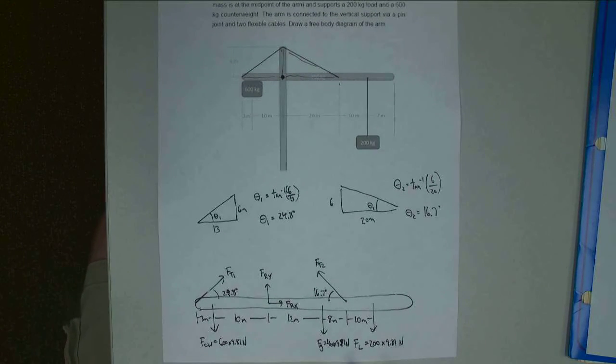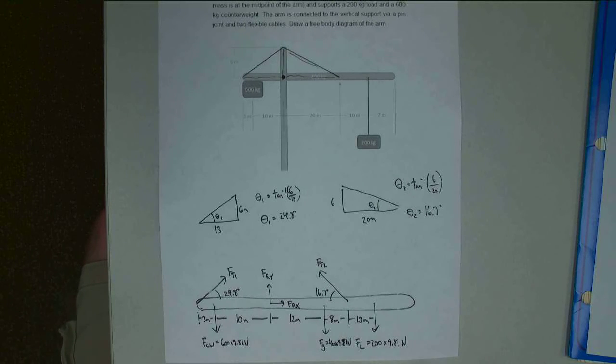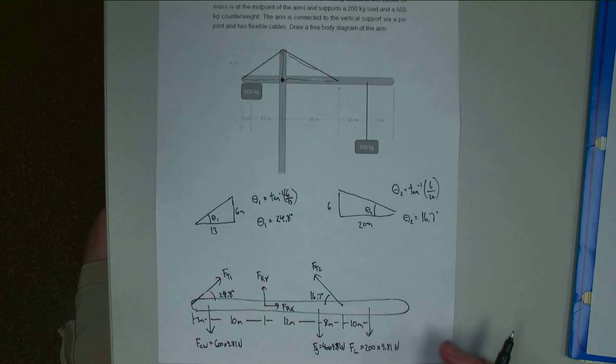Alright, so with that, we've got our arm that's separated from everything else. We've added in all the forces acting on that arm. We've added in all the key dimensions and all the key angles. So we've got our free body diagram. Now with that, thank you for watching.